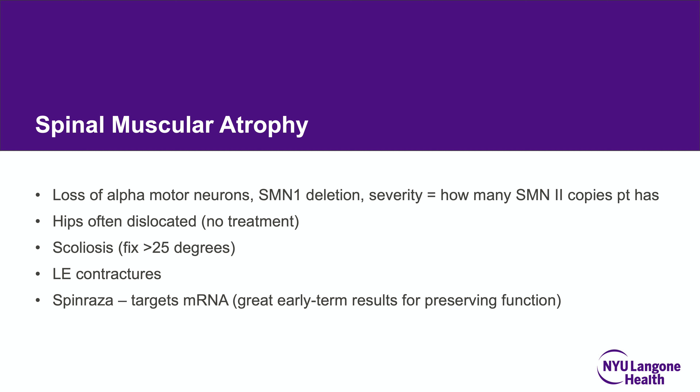Spinal muscular atrophy treatment has changed significantly with gene therapy. Most patients are now on Spinraza, which targets the mRNA, with good early results. For board purposes, know that without treatment this is progressive due to loss of alpha motor neurons and an SMN1 deletion. Dislocated hips are currently not treated, though this may change with gene therapy. Scoliosis can be rapid and devastate lung function — operative fixation is recommended when the curve exceeds 25 degrees.